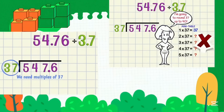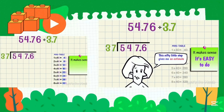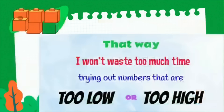It means we need multiples of 37. Some numbers give predictable patterns in their multiples — great for a mini table to help us work. We can tell that 37 will not behave like that; it would take ages. So I am going to round 37 up to 40 and do a mini table for that instead. I write the table of 4 and add a zero to make it the table of 40. This nifty little step gives me an estimate to work from, so I won't waste time trying numbers that are too low or too high.